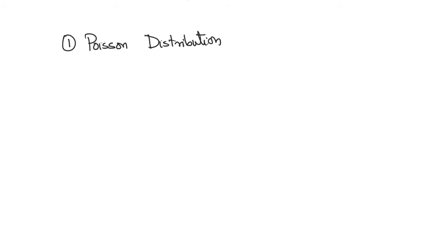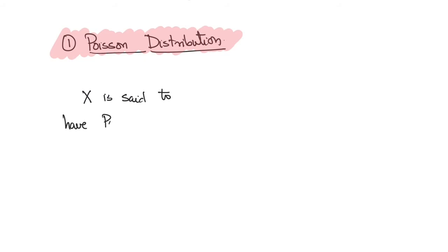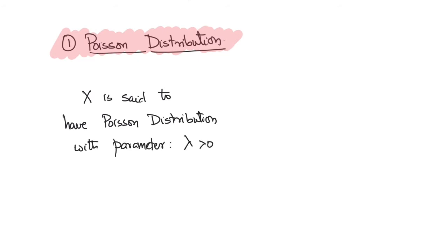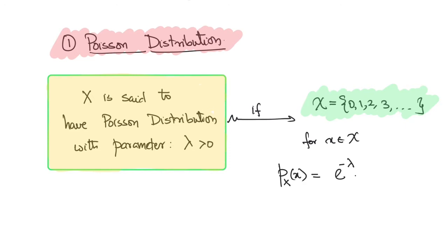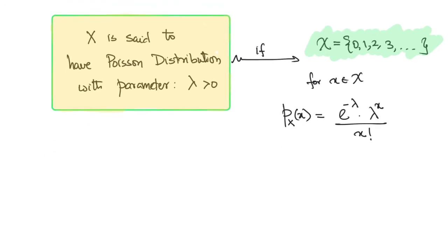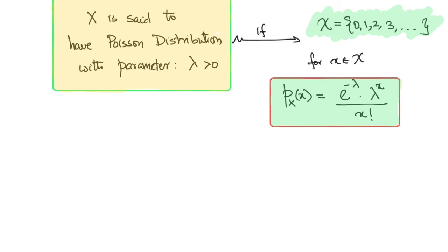We begin with the first example, which is the Poisson distribution. We say that x has a Poisson distribution with parameter lambda greater than 0 if x takes values in the set 0, 1, 2, 3, all the way up to infinity. The PMF, that is the probability that x equals small x, is defined as e to the minus lambda times lambda to the x divided by x factorial.